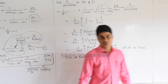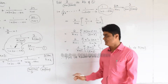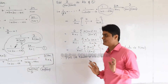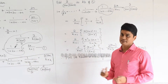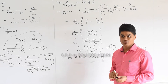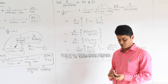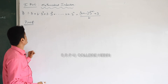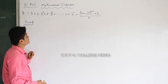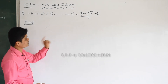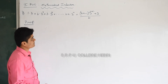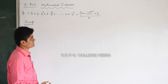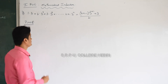That problem was very simple. So next question: 1 into 3 plus 2 into 3² plus 3 into 3³ and so on up to n into 3ⁿ equals (2n minus 1) into 3^(n+1) plus 3, all divided by 4.